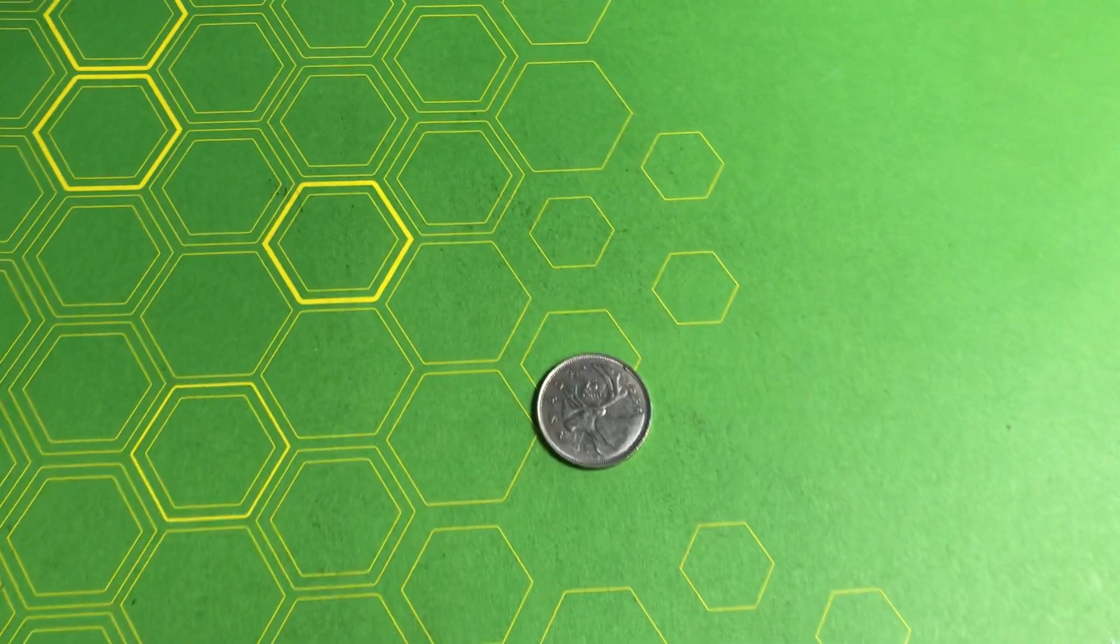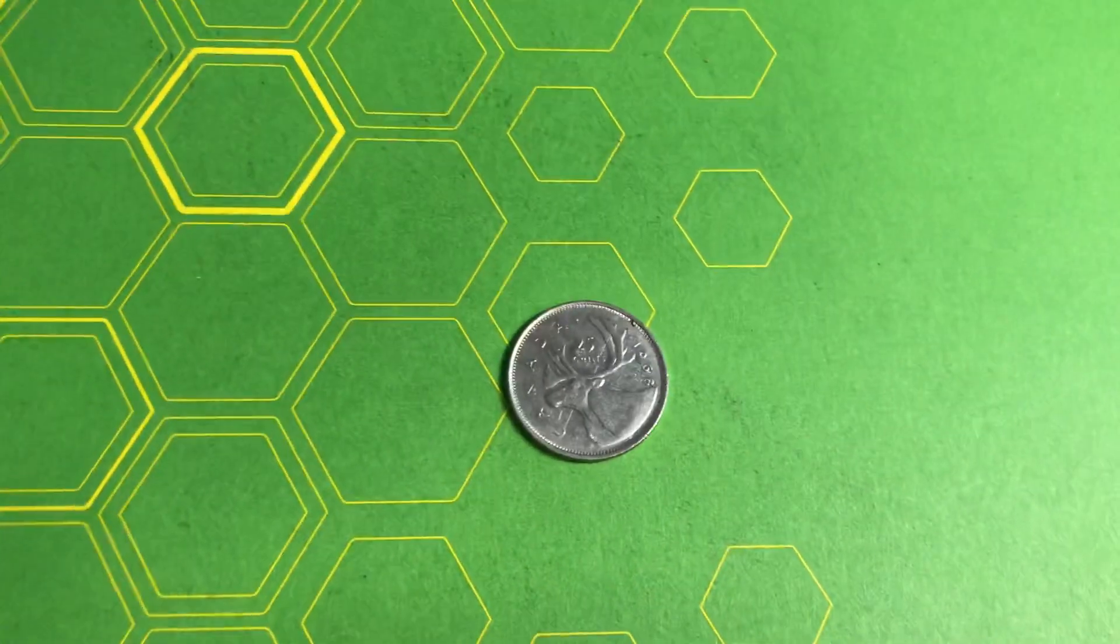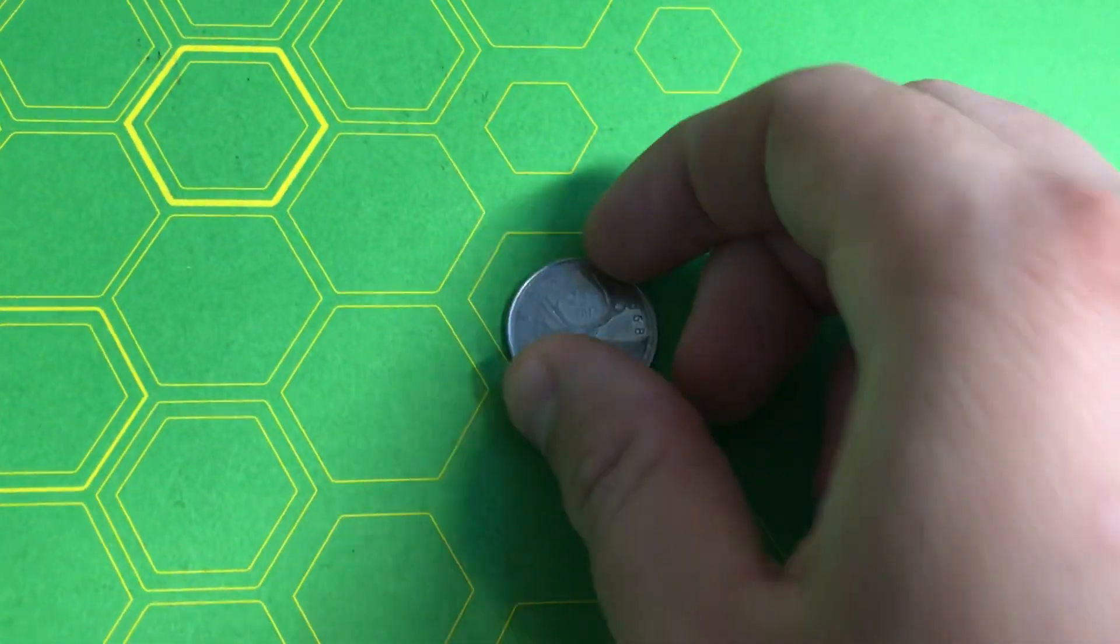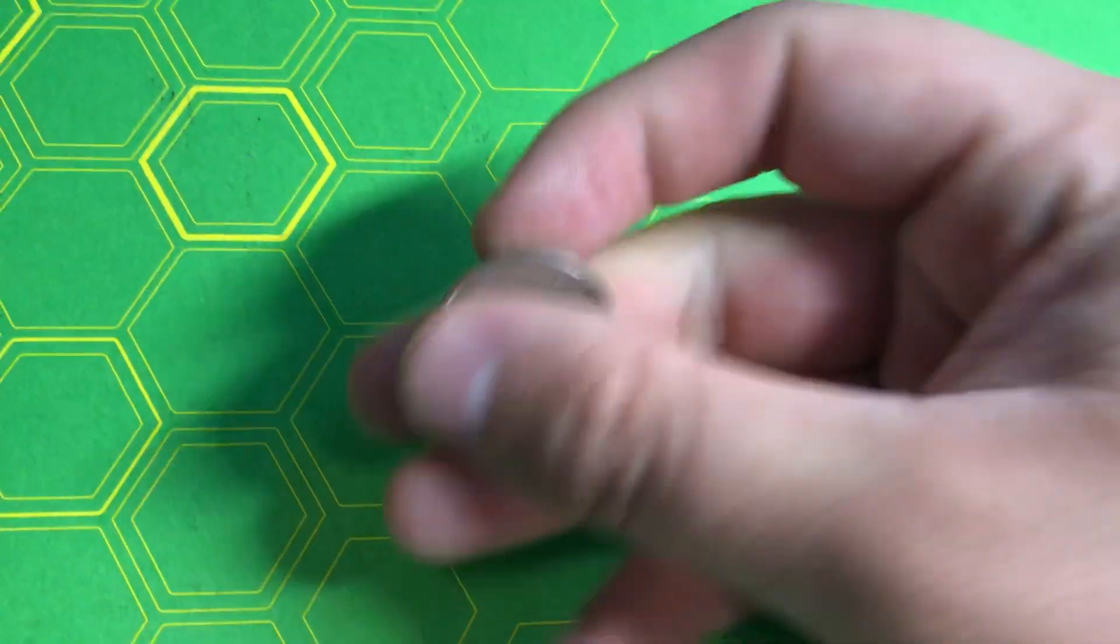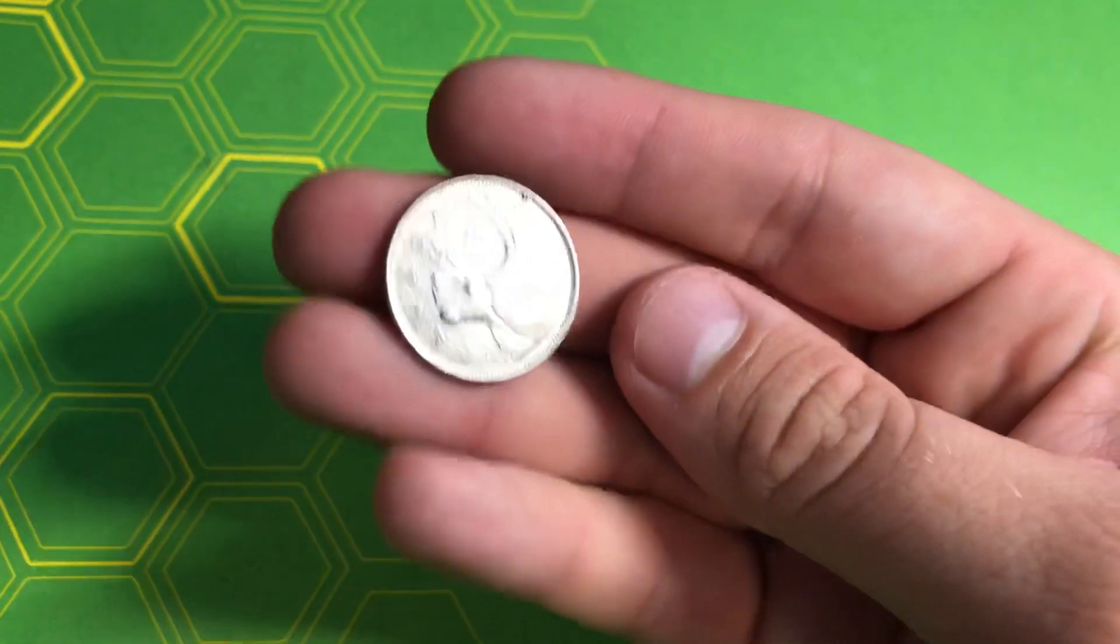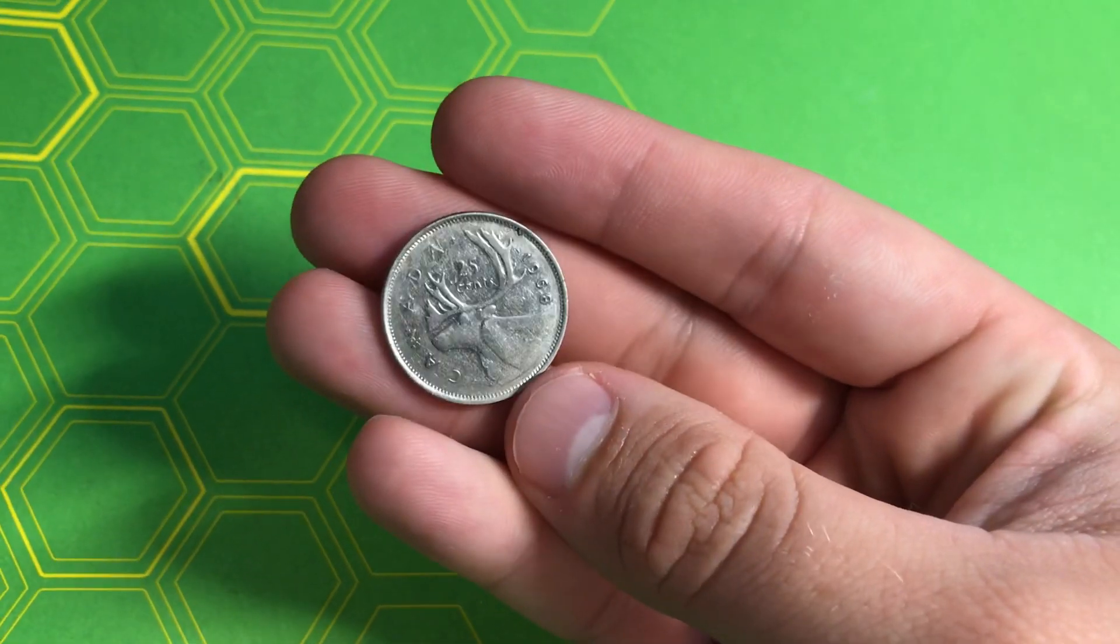So guys, the other day I went to a grocery store I don't usually go to and I checked the coin star because I always check coin stars to see what I can find. I found this 1968 Canadian quarter. It's pretty cool.